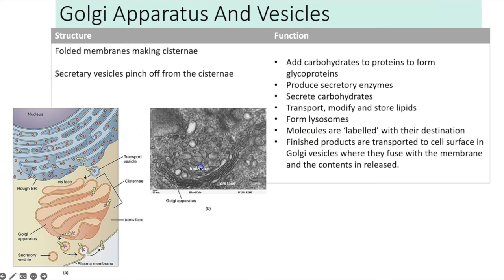The Golgi apparatus is also made up of folded membranes called cisternae but is more curved in shape, with secretory vesicles that pinch off from the edges. Anything processed and packaged within the Golgi apparatus is secreted out in these vesicles. Functions include: adding carbohydrates to proteins to form glycoproteins, producing secretory enzymes, secreting carbohydrates, transporting/modifying/storing lipids, forming lysosomes, labelling molecules for their destination, and releasing finished products in vesicles that fuse with the cell surface membrane.